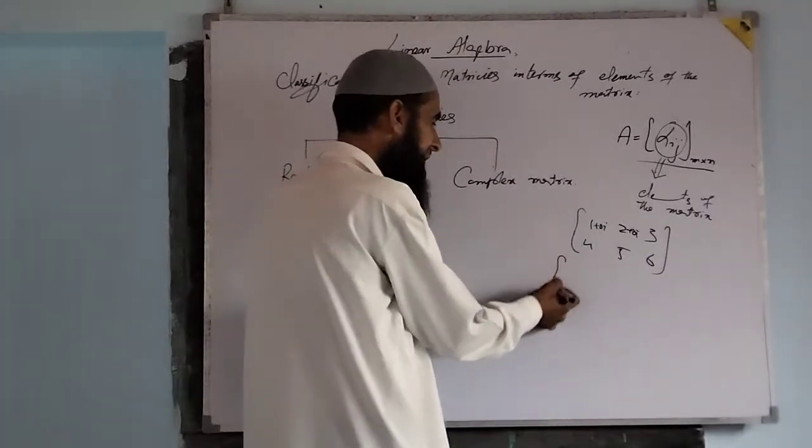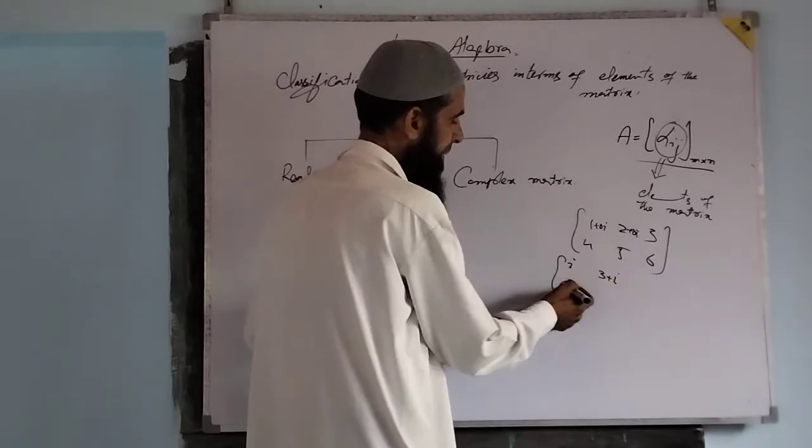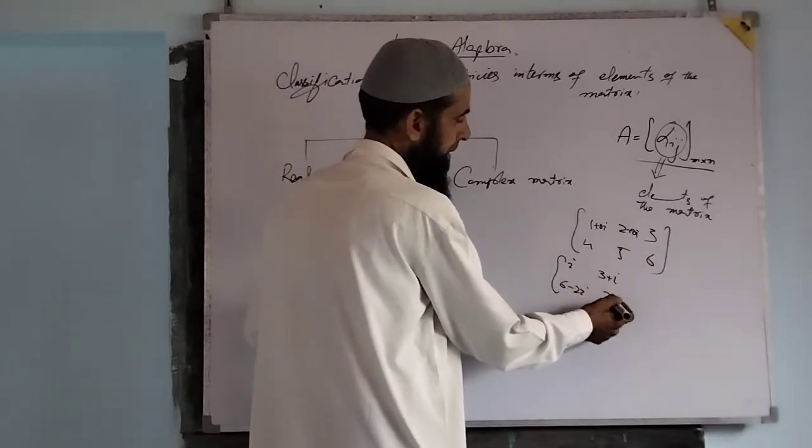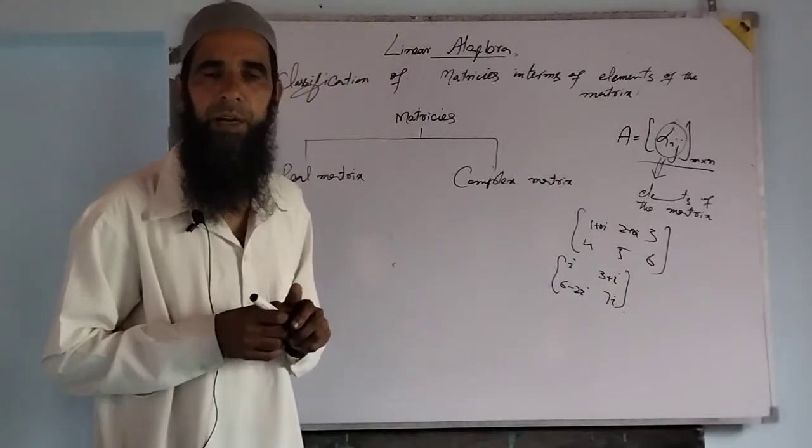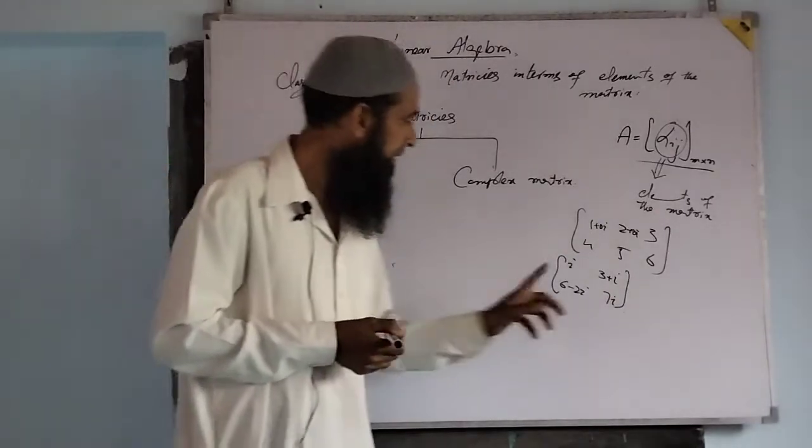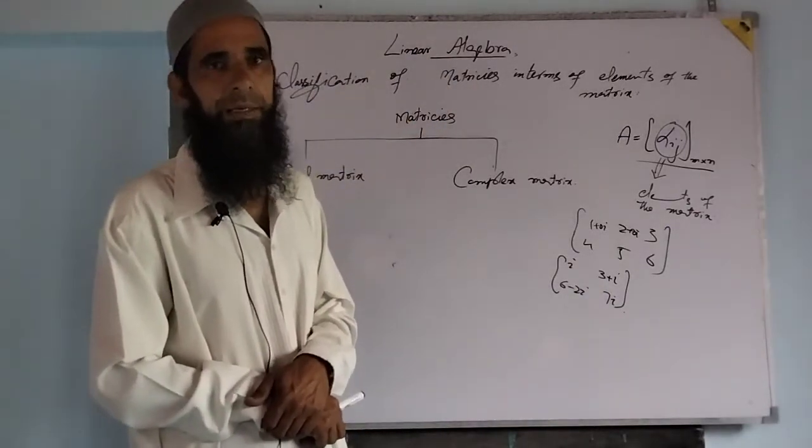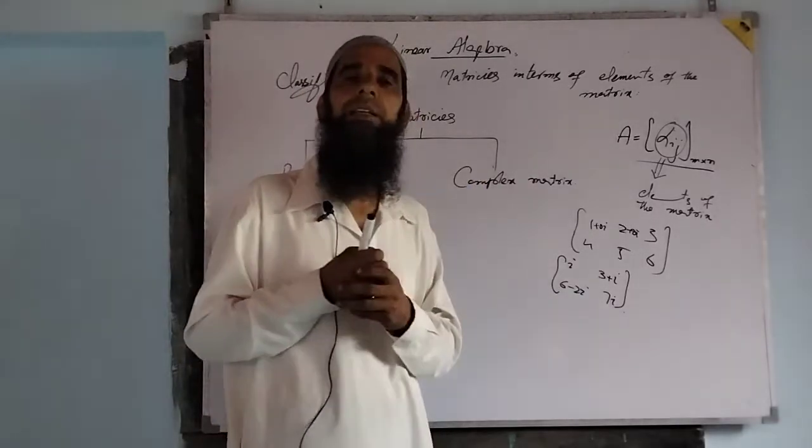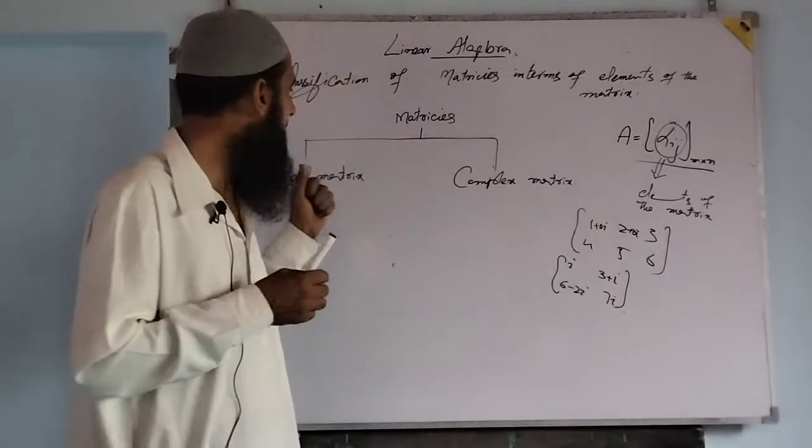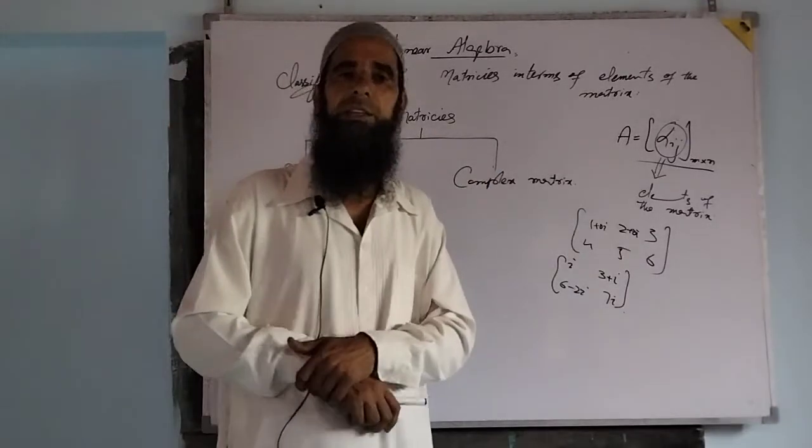And if we have a matrix like [iota, 3 plus iota, 6 minus 2 iota, 7 iota], this matrix of order 2×2 is a complex matrix but not a real matrix. That's the difference. We have two classes of matrices: real matrices and complex matrices.